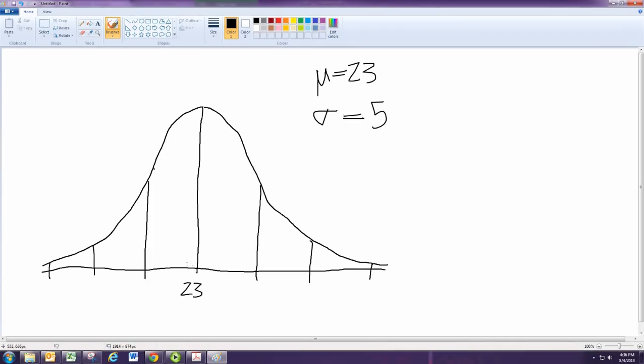So even horizontal distance between these vertical lines. Now we're going to go ahead and label the horizontal axis. And we use the standard deviation to advance to the right by adding it. So from 23 to the next line is adding 5, we'd get 28. And adding 5 again, we would get 33. And adding 5 again, we would get 38.